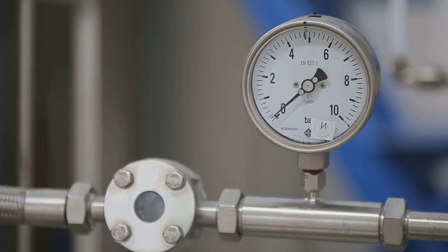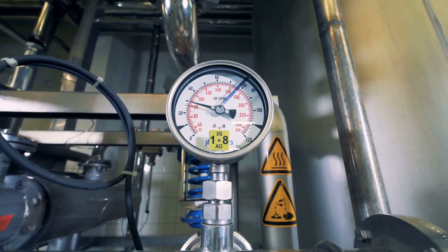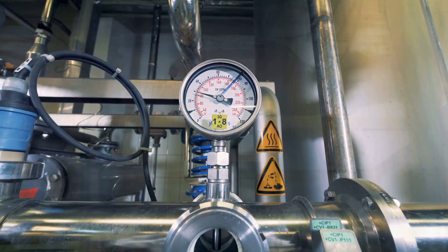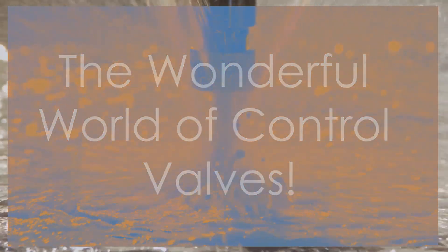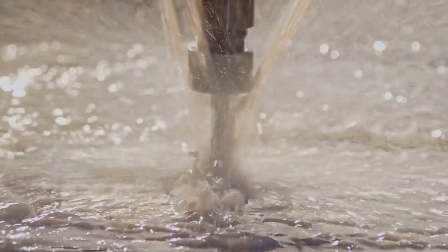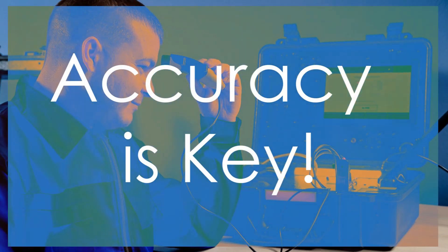Pressure transmitters: how do they work? They measure pressure and convert it into an electrical signal, telling us what's going on inside those pipes. Control valves regulate the flow of liquids and gases to keep everything running smoothly.